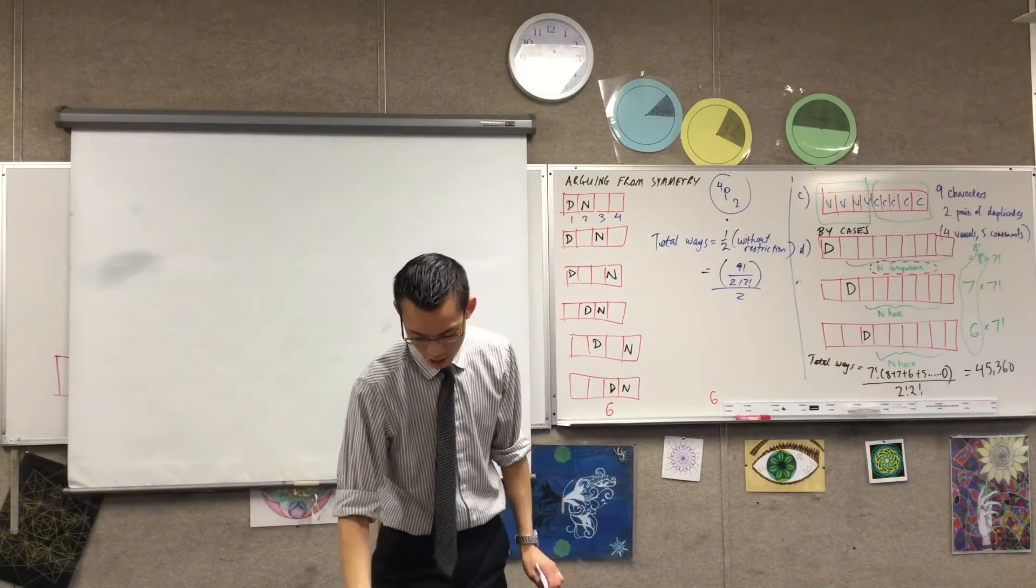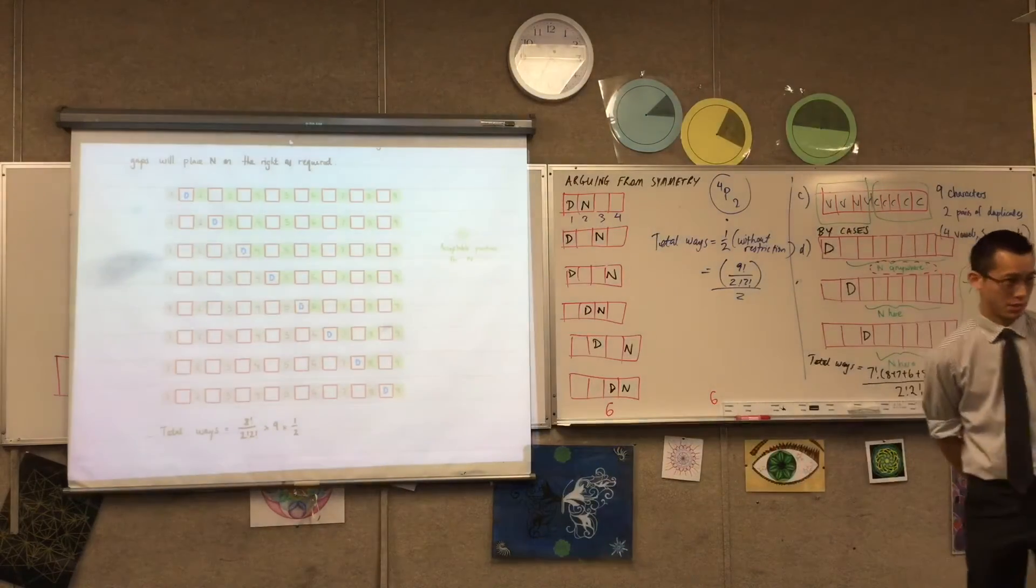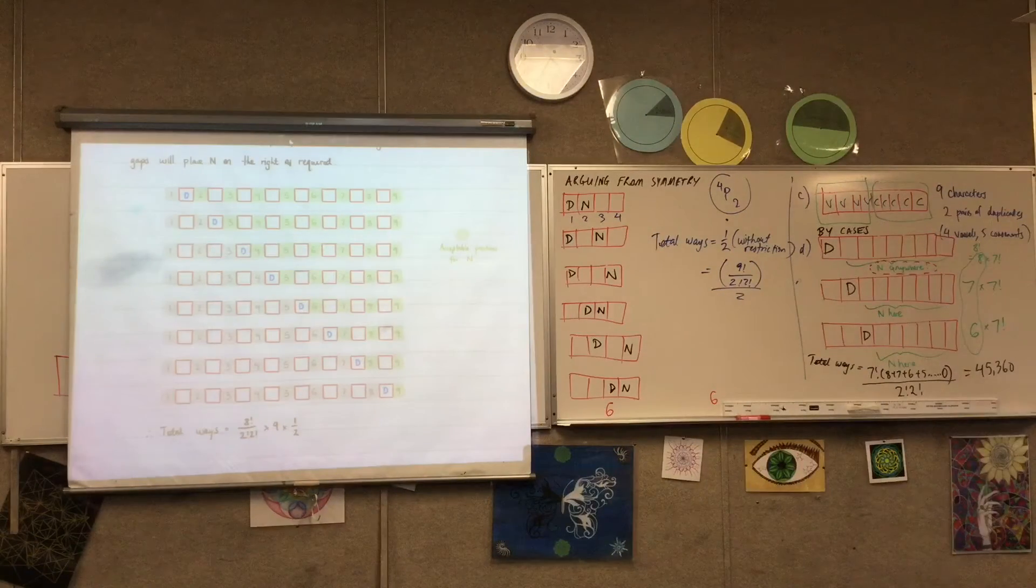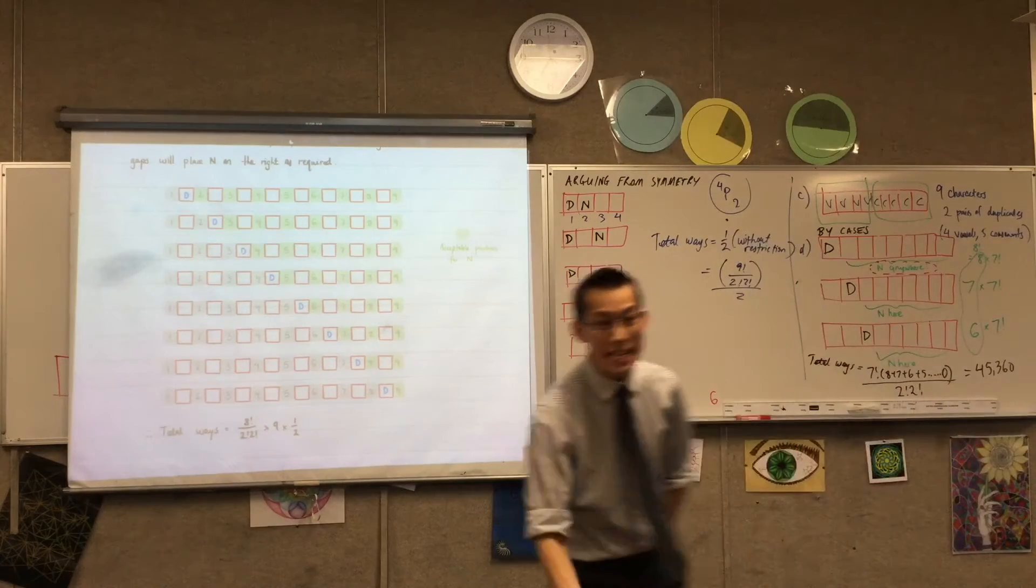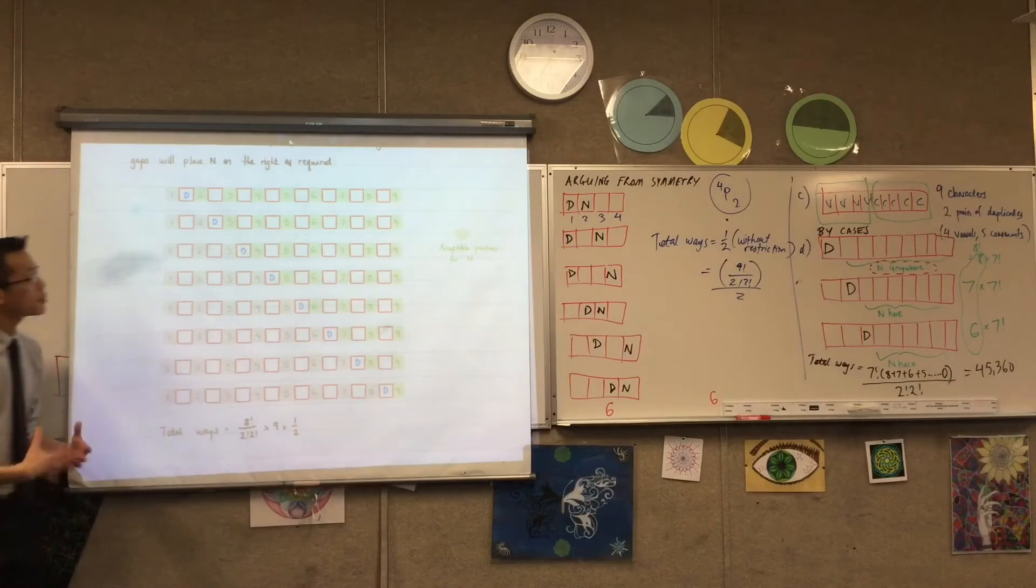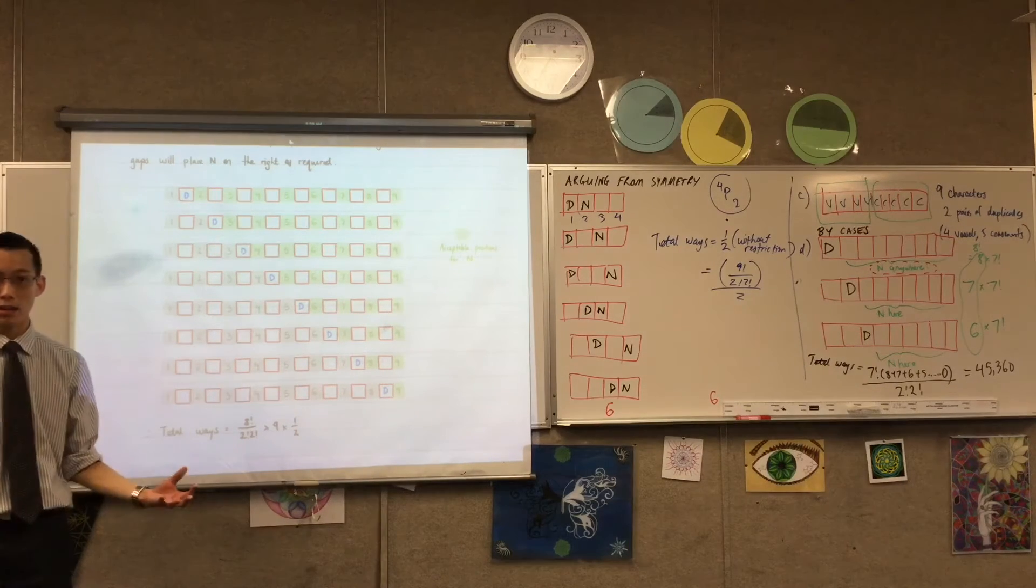Now, I'm just going to use this because it'll take me too long to draw, and you've already got it. Have a look at this, right? Okay, D can be in any one of those eight spots, but depending on where D is, that makes some spots okay and some spots not okay for N. Does that make sense?